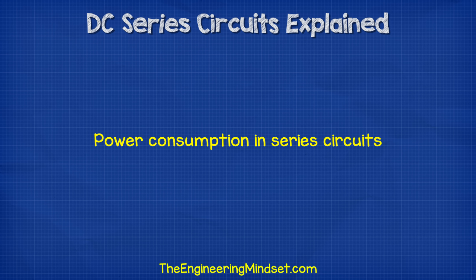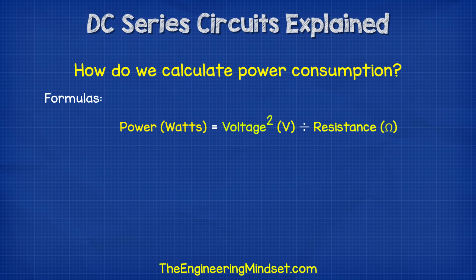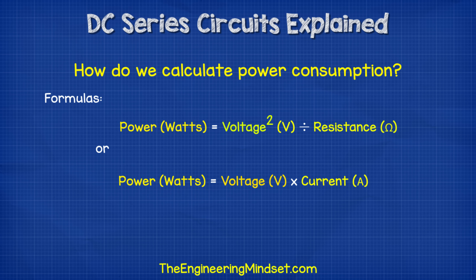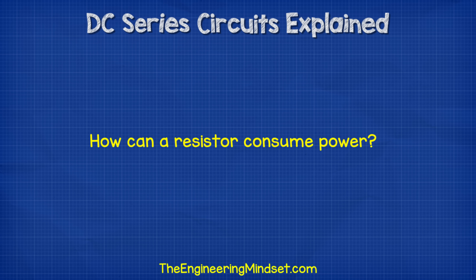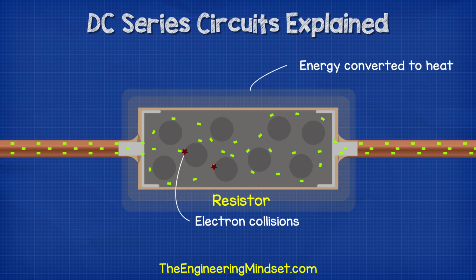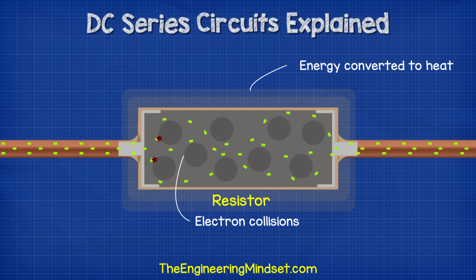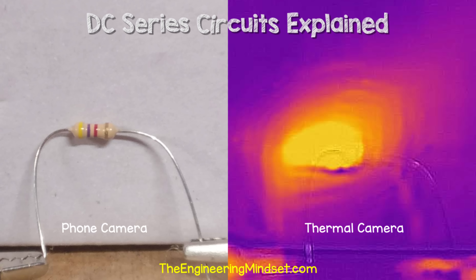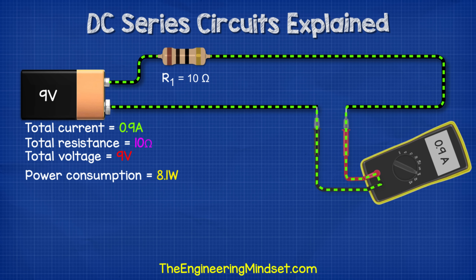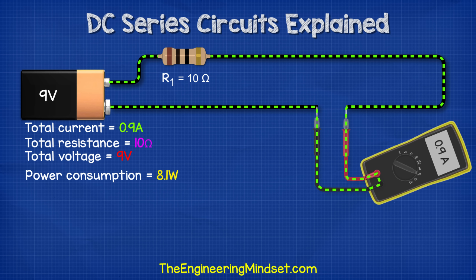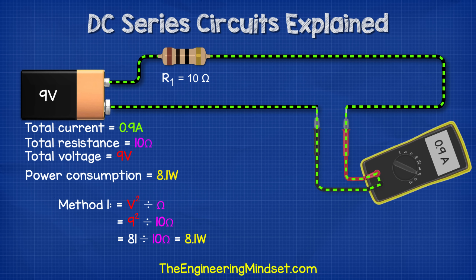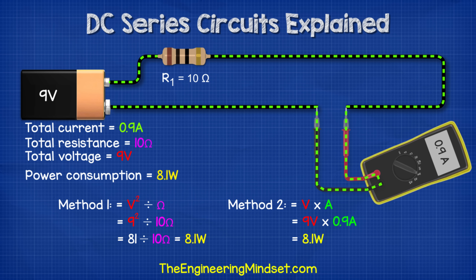Power consumption in series circuits. We can measure power consumption using: power (watts) equals voltage squared divided by resistance, or power equals voltage multiplied by current. As the resistor creates a voltage drop, electrons lose energy which is converted into heat — we can see this with a thermal imaging camera. In the first circuit: 9² ÷ 10 = 8.1 watts, or 9 × 0.9 = 8.1 watts. In the second circuit with 15 ohms total: 9² ÷ 15 = 5.4 watts, or 9 × 0.6 = 5.4 watts.